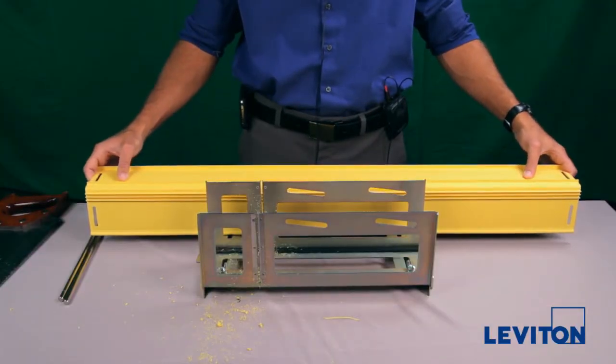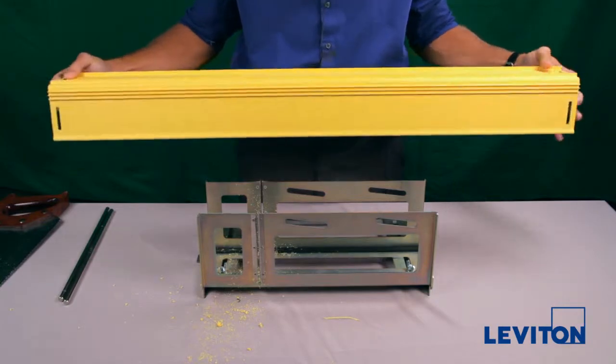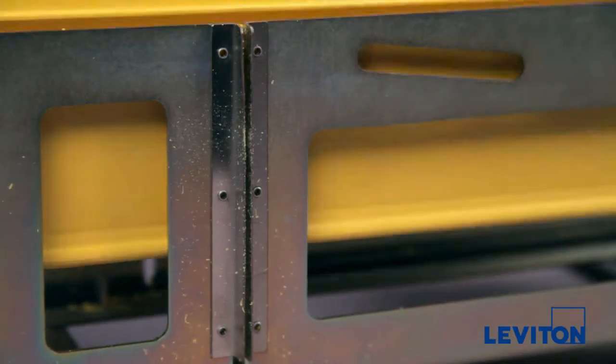We're going to be cutting a piece of 4 by 4 inch raceway ducting which I have right here. So you're going to take your piece of ducting, place it into the miter box.